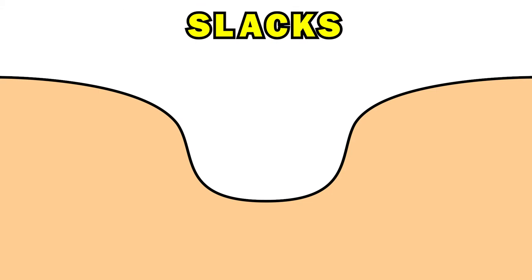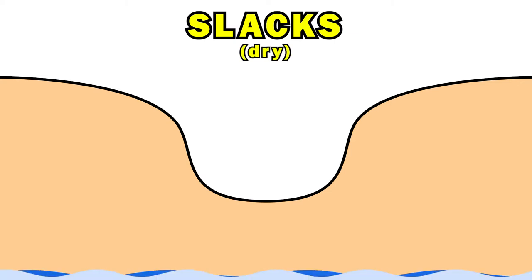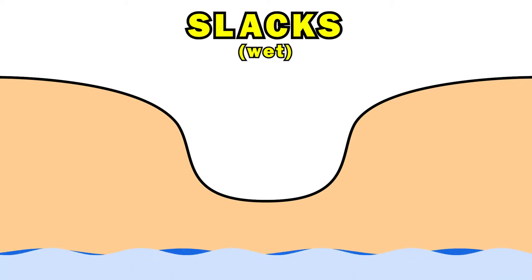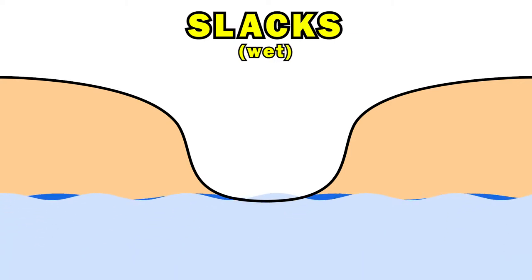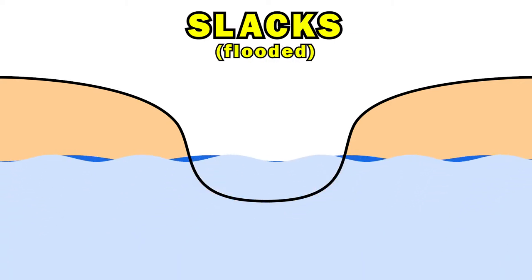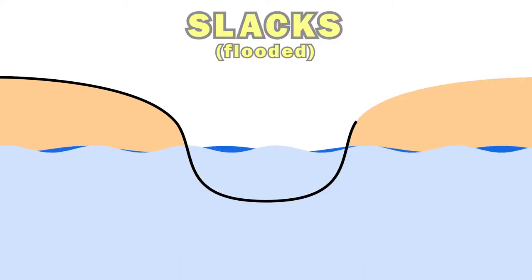Slacks are hollows between dune ridges that graze or expose the water table. There are three types of slacks, depending on where the water table is relative to the depression: dry slacks, wet slacks, and flooded slacks.